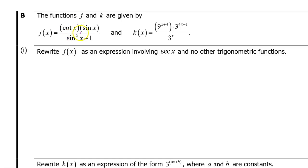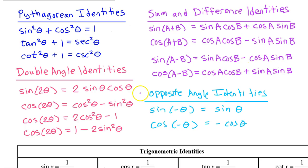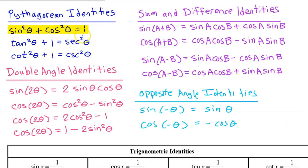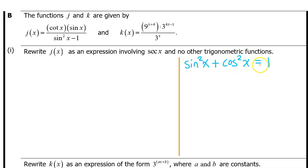For part b, j of x is given by this expression and k of x equals this expression. b part 1: rewrite j of x as an expression involving secant x and no other trigonometric functions. Here's a set of trig identities that you're going to have to memorize. There will be no formula sheet on the AP Precalculus exam, so pause the screen and practice writing these identities on a piece of scratch paper from memory. Also, make sure you know these basic trig identities as well. This first Pythagorean identity is the one that shows up the most often, and we're about to use it right now. Sine squared x plus cosine squared x is equal to 1. I'm focusing on the denominator sine squared x minus 1. I would like to get rid of this minus 1 somehow, and I think I can use this to make it happen.